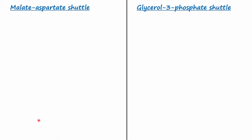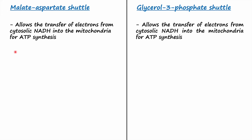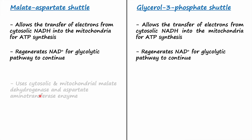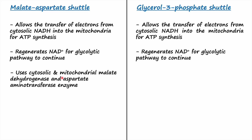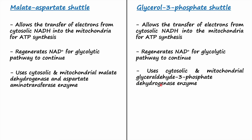Both the malate-aspartate shuttle and the glycerol-3-phosphate shuttle allow the transfer of electrons from cytosolic NADH into the mitochondria for synthesis of ATP. Both also regenerate NAD+ for the glycolysis pathway to continue. The malate-aspartate shuttle uses cytosolic and mitochondrial malate dehydrogenase and aspartate aminotransferase enzymes, whereas the glycerol-3-phosphate shuttle uses cytosolic and mitochondrial glycerol-3-phosphate dehydrogenase enzyme.